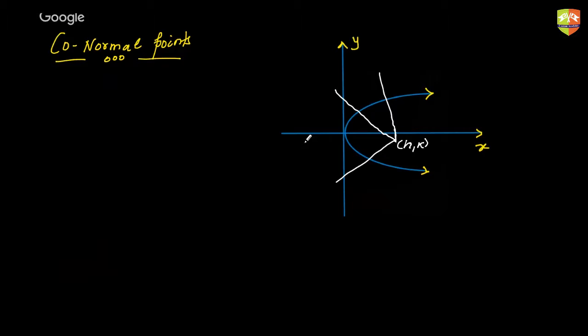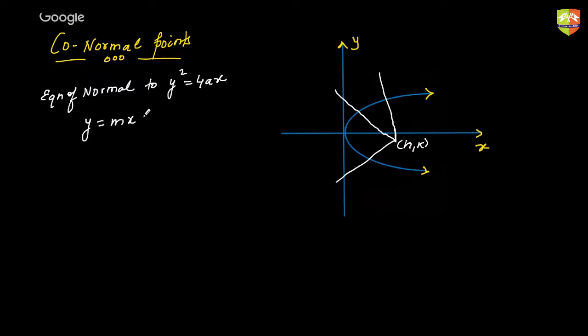How many normals can be drawn from a point external to the parabola onto the parabola? Please type it in the chat box. The answer is hidden within the equation of a normal to the parabola. We all know that the equation of the normal to the parabola y² = 4ax is given by y = mx − 2am − am³.